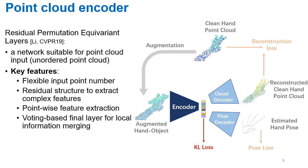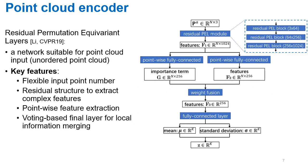Taking the augmented hand-object point cloud as input, the encoder first compresses the input to a low-dimensional latent vector. We use a variational autoencoder, therefore this latent space is also constrained with the KL divergence loss. For the encoder's network, we have used our previous paper's method, the residual permutation equivariant layers. This network takes unordered point cloud as input and can extract complex features.